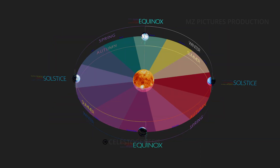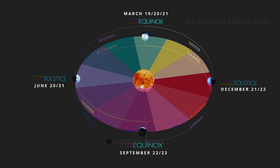There are two equinoxes and two solstices every year. The equinoxes fall on March 19th, 20th, or 21st, and September 22nd or 23rd. The solstices fall on June 20th or 21st, and December 21st or 22nd.